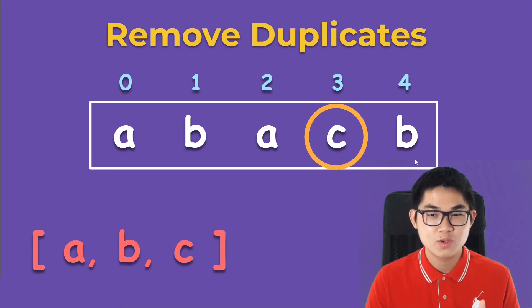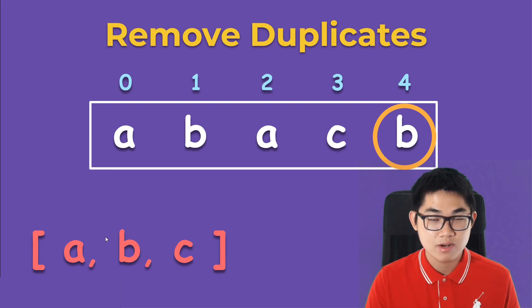And then finally, we move on to our very last element and we see that we have B inside our list already, so we don't add it into the list. And now as you can see, we have successfully removed all the duplicates from our array. And we have A, B, and C.